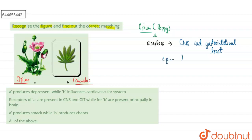The opium plant majorly produces morphine as well as heroin, which is commonly called smack. These opioids work as a depressant, meaning they regulate the mood of the person.